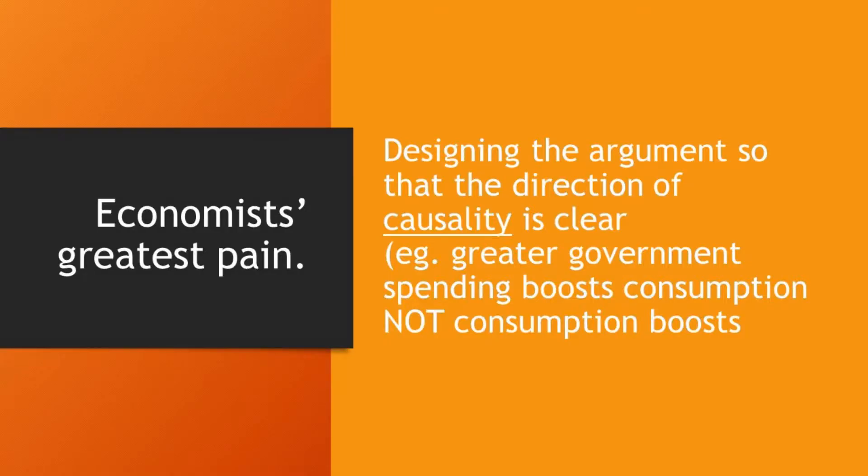Economists are really keen on explaining causality because we're bad at it. We can, for example, show that when government spending increases, consumption increases, but we're not really clear about whether it is the spending that caused the increased consumption, or consumption increased the spending. So it is important to have a theory — a model — that shows exactly how the causality flows from where to where, because otherwise that will be complicated.